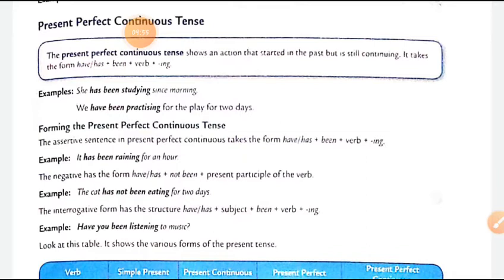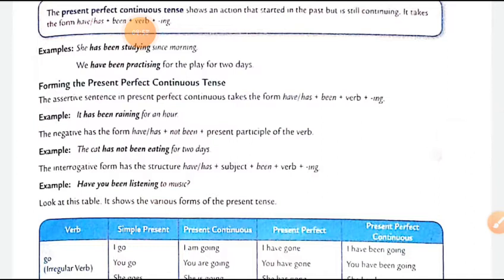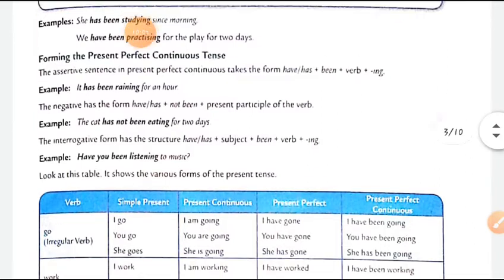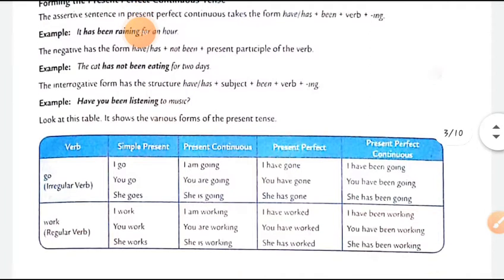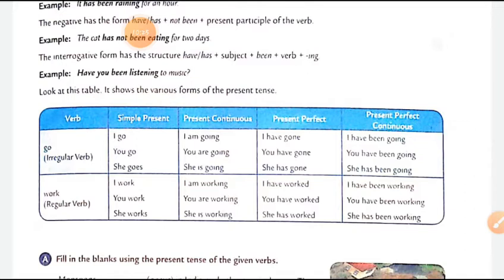The assertive sentence in present perfect continuous takes the form: has/have + been + verb + ing. For example: 'It has been raining for an hour.' The negative has the form: has/have + not + been + present participle. For example: 'The cat has not been eating for two days.' For interrogative, has/have comes first: 'Have you been listening?' The helping verbs do/does/has/have come first in interrogative sentences.